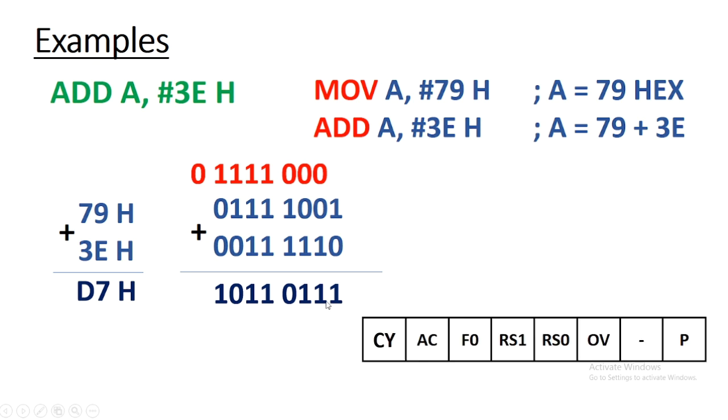And accordingly, if you check the result, those flags are set or reset. After this addition, the status of carry flag, auxiliary flag, and parity flag would be 0, 1, and 0.